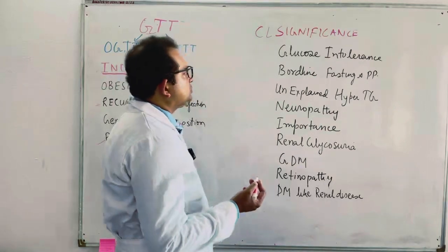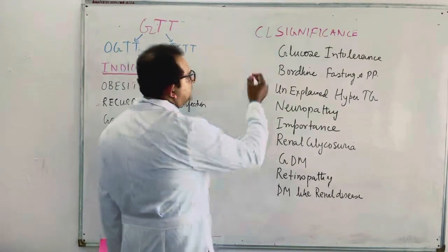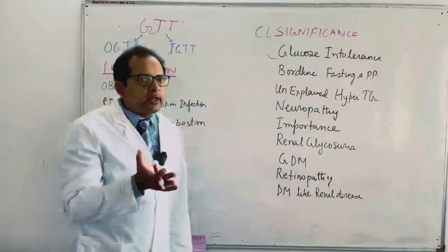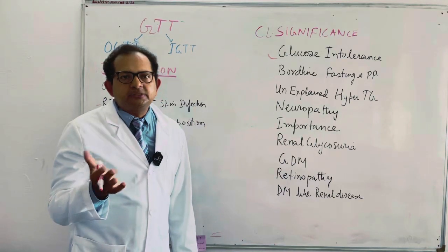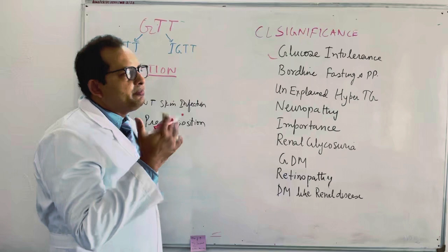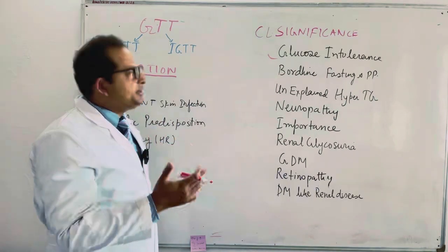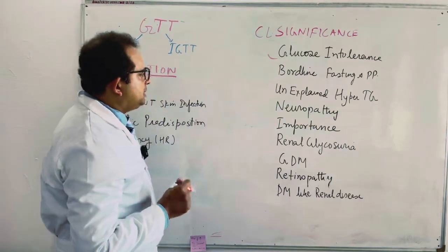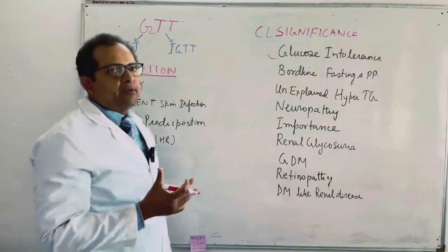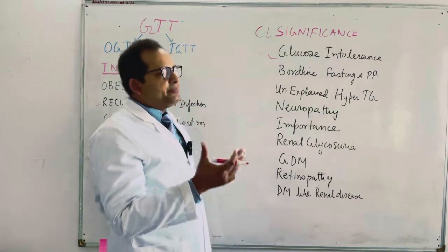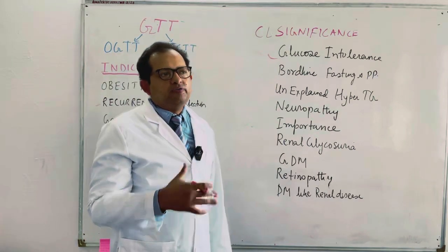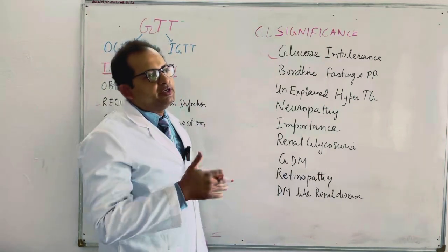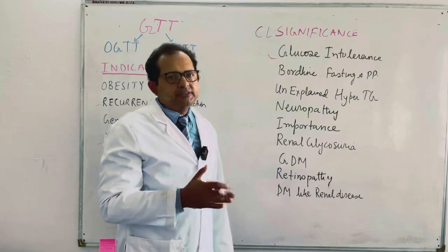So what is the clinical significance for glucose tolerance test? If we have to find out glucose intolerance, if somebody is suffering from borderline diabetes mellitus, that means fasting and post-prandial values are increased just borderline close to normal range. Also, if somebody is having unexplained hypertriglyceridemia, we will go for GTT to find out whether they are triglyceridemic because of diabetes or some other reason.